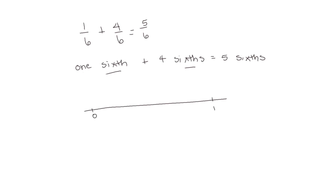Again, we're going to divide the number line into 6. This time we're starting at 1 sixth and going forward 4 sixths — 1, 2, 3, 4 — so we end up on 5 sixths. So 1 sixth plus 4 more sixths, we end up with 5 sixths.